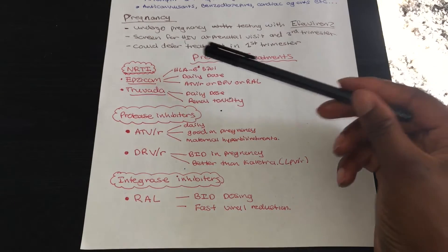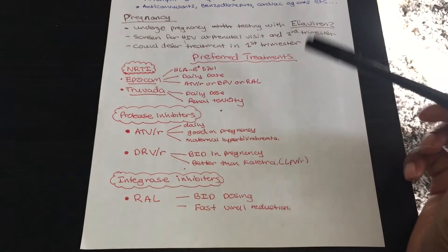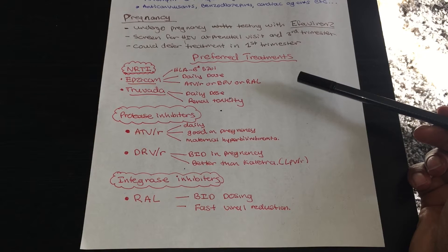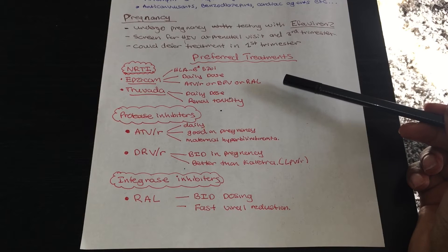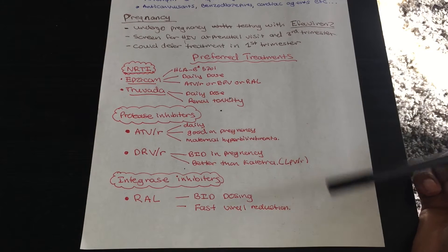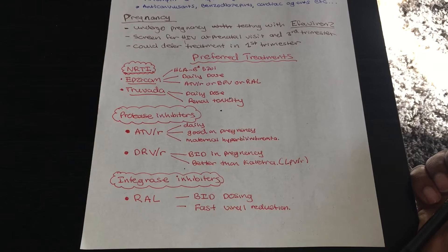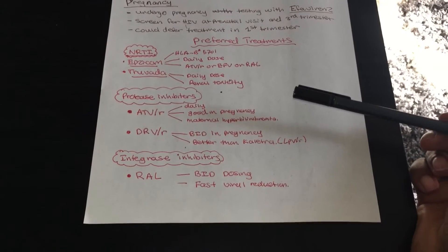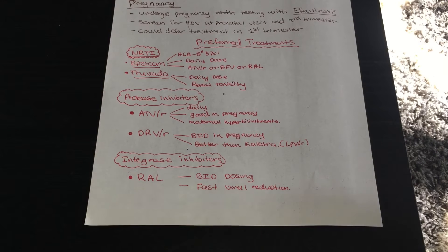Preferred treatments for HIV start with the NRTI class. The two preferred agents are Epzicom and Truvada. Epzicom contains abacavir with lamivudine; Truvada contains tenofovir with emtricitabine. Anyone with HLA-B hypersensitivity should not use Epzicom due to the abacavir component. Epzicom is once daily, but in combination with raltegravir, efavirenz, or atazanavir, RNA copies must be less than 100,000 copies/mL.